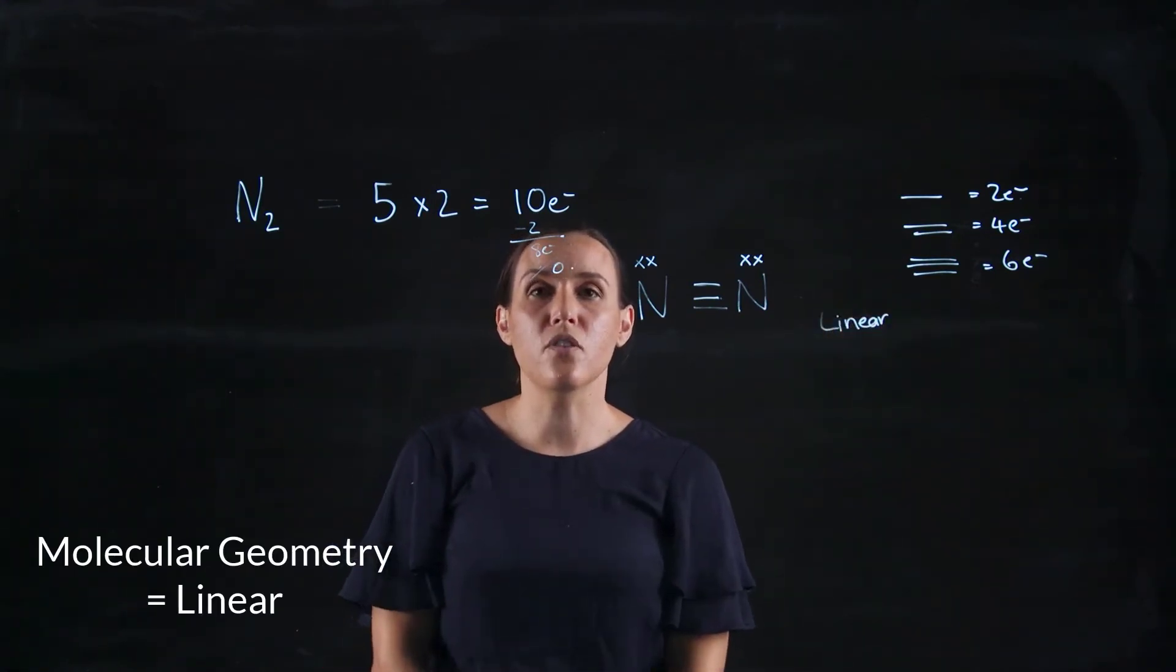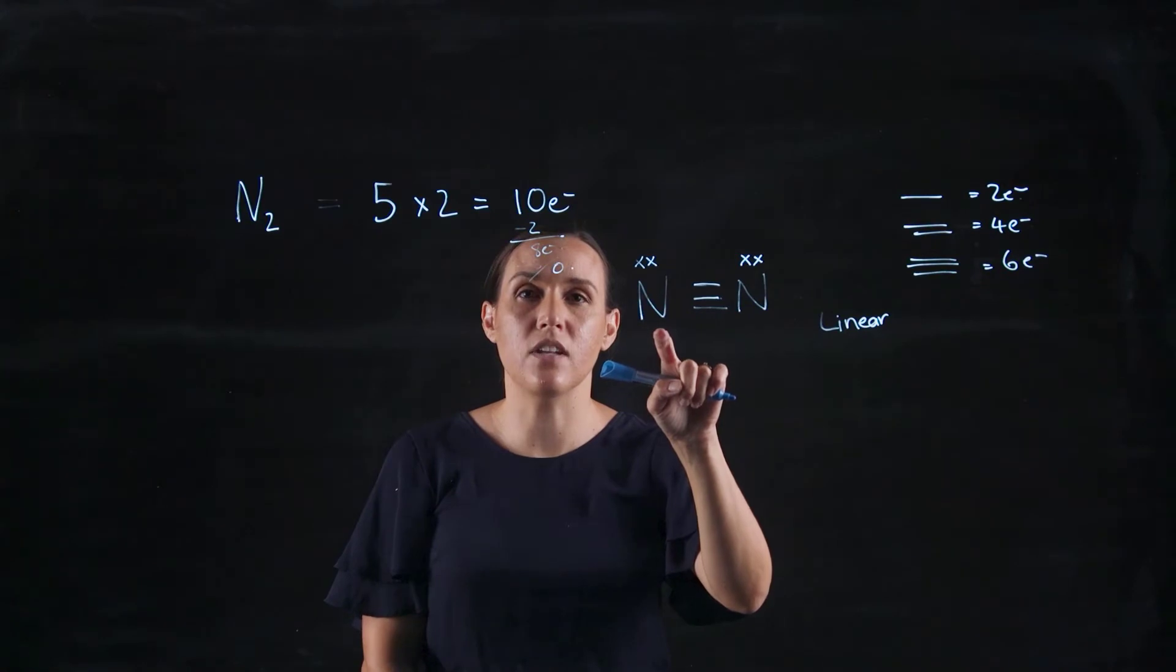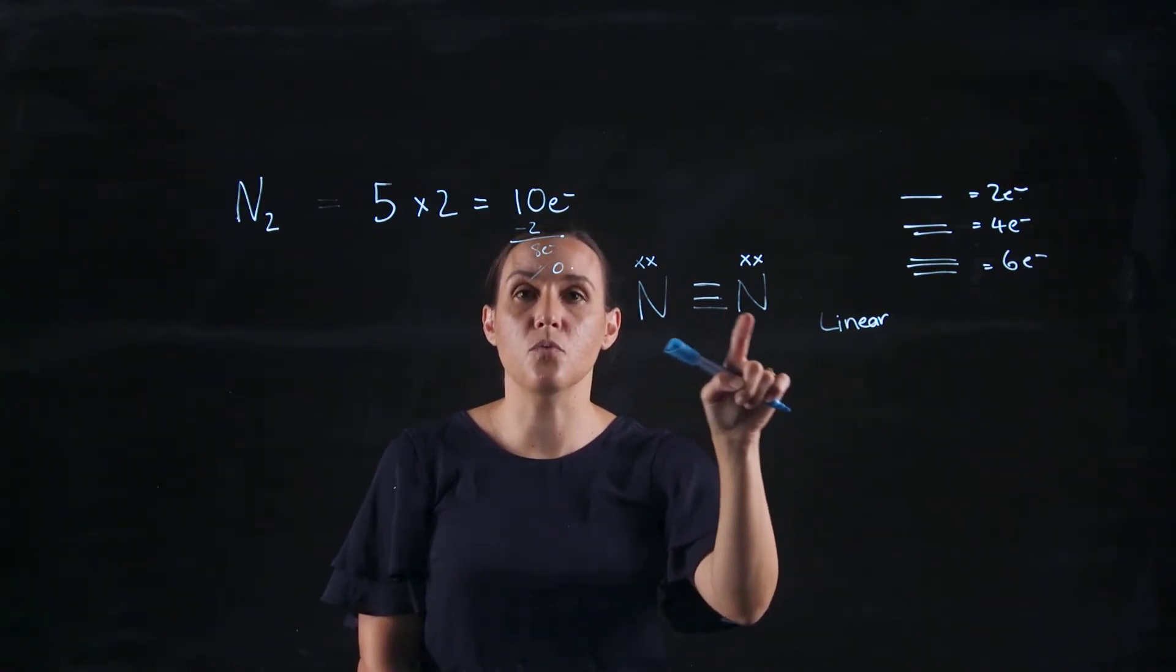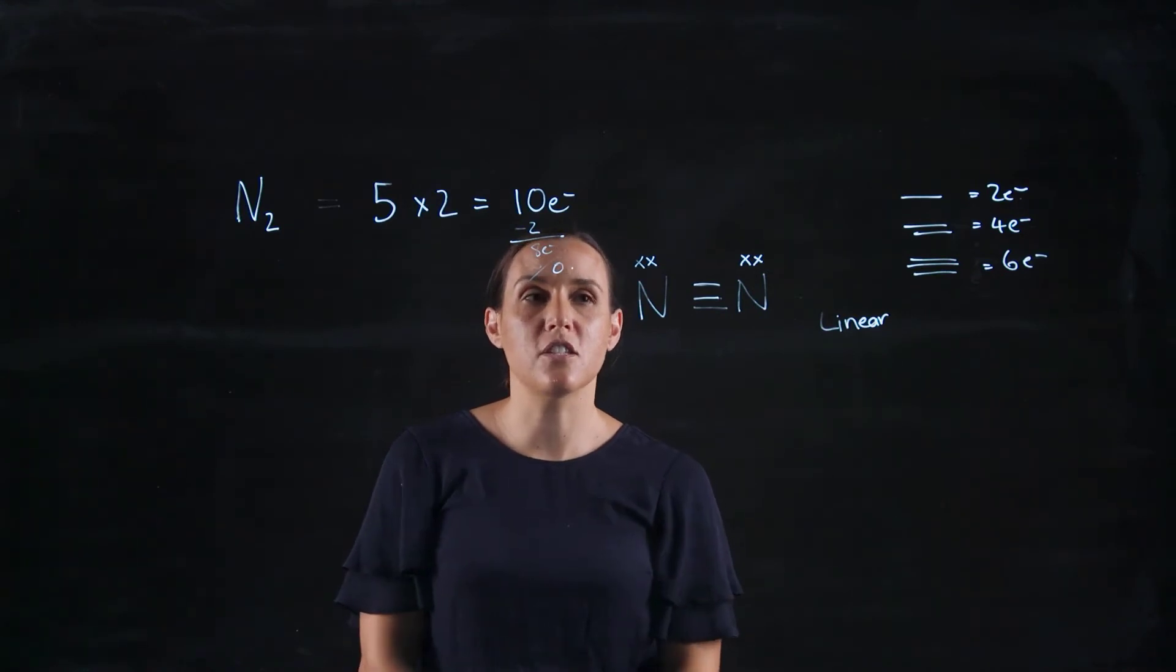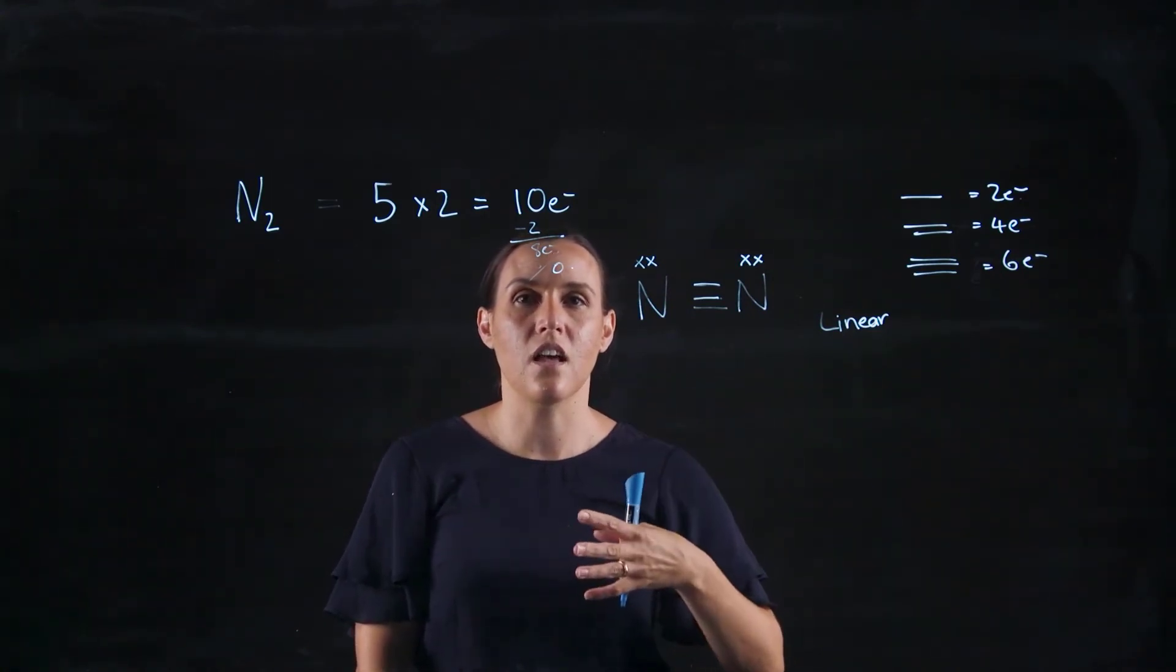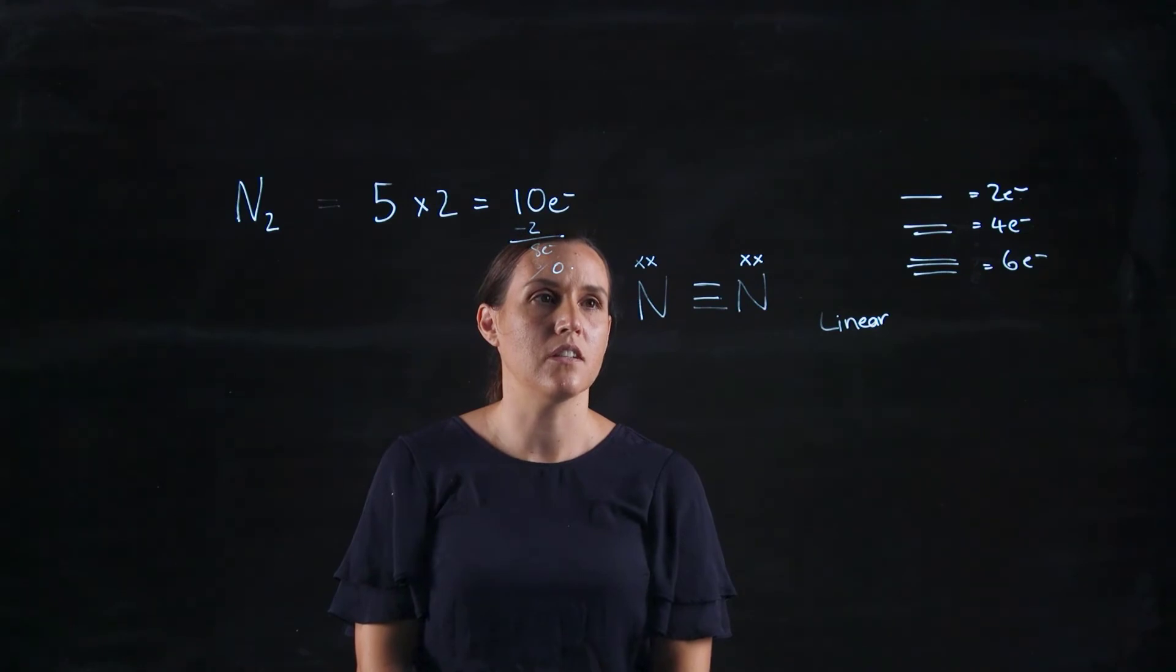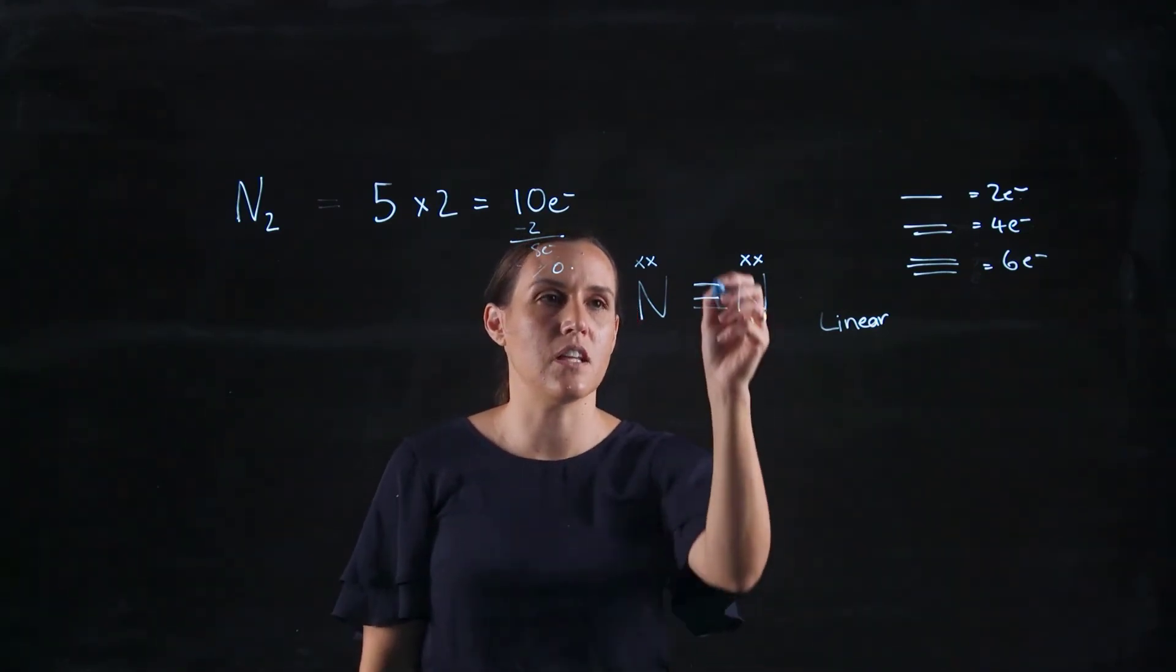Now, in terms of the polarity of this one, so this would be a non-polar compound purely because the electronegativity on each of the nitrogens would be the same. So they would have an equal pull on those shared electrons. So there would be no resulting region of the molecule that would have more electrons than the other part of the molecule. So it's like a tug of war, and they're both pulling equally on those central electrons.